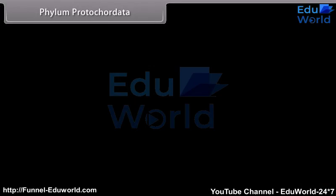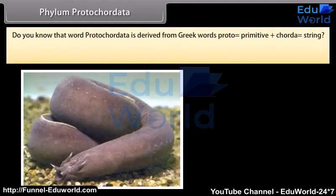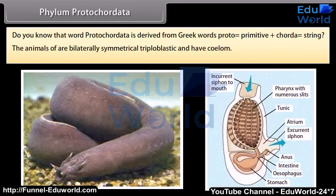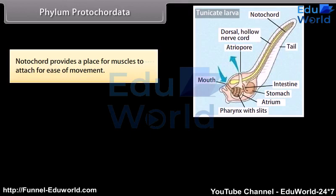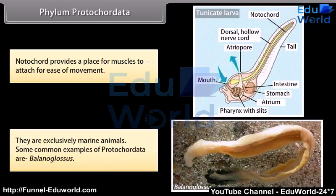Phylum Protochordata. The word Protochordata is derived from Greek words: proto, meaning primitive, plus chorda, meaning string. The animals are bilaterally symmetrical, triploblastic, and have a coelom. They have a notochord, which is a long rod-like support structure that runs along the back of the animal, separating the nervous tissue from the gut. This notochord is not present at all stages of life. The notochord provides a place for muscles to attach for ease of movement. They are exclusively marine animals. A common example is Balanoglossus.